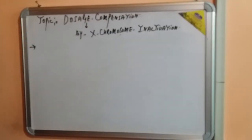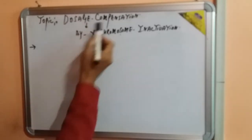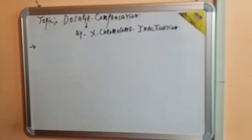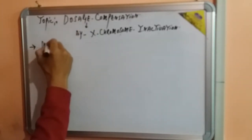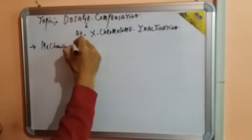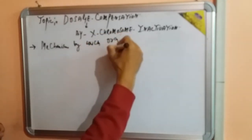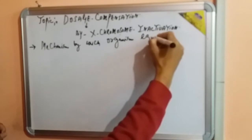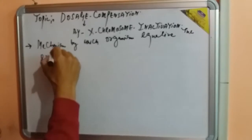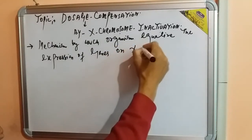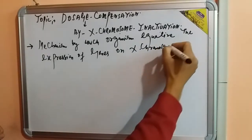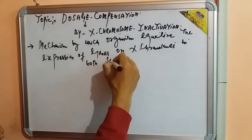Today we are going to discuss a very important concept in genetics: dosage compensation. We will also discuss X chromosome inactivation and the concept of Barr bodies and how to calculate the number of Barr bodies in a cell. Dosage compensation is basically a mechanism by which organisms equalize the expression of genes on chromosomes, especially on X chromosomes, in both sexes.